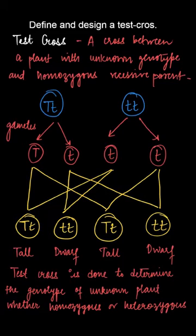The gametes produced will be capital T and small t by the heterozygous parent and small t small t by the homozygous recessive parent. In yellow, we can see the genotype of the offspring.